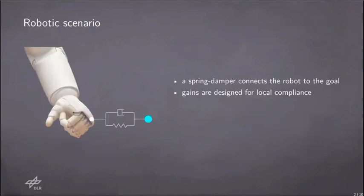The situation is quite similar when we consider a robotic system, since typically the control action consists in connecting the robot to the goal through a spring-damper. Therefore, the farther the goal, the stronger the control action.